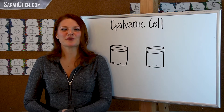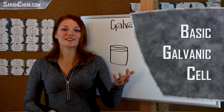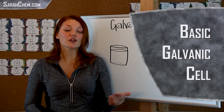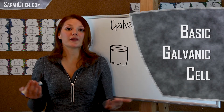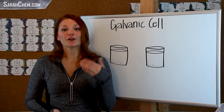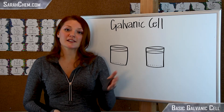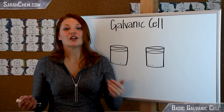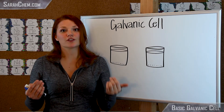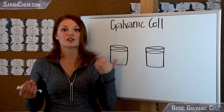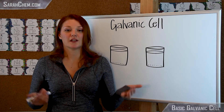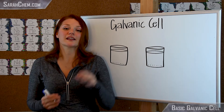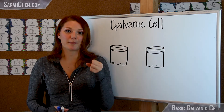Hi everyone. In this video tutorial I'd like to take a look at galvanic cells, also known as voltaic cells or more colloquially as a battery. These are going to run on oxidation-reduction reactions, or redox reactions, which is essentially where you have electrons transfer between two species — one thing gives up electrons and another takes them.